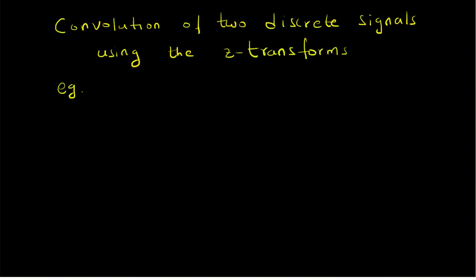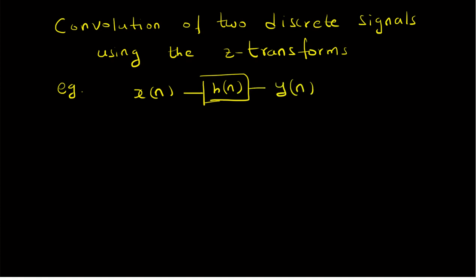In this example, we have a linear time invariant system that has an input X of n that goes through a system with unit sample response H of n, and the corresponding output is Y of n. We are given both X of n and H of n, and our goal is to find Y of n.